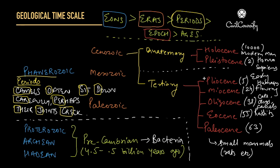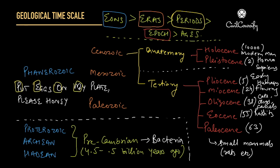For the epochs of the Tertiary and Quaternary periods, here is the third mnemonic: 'Put Eggs On My Plate, Please Honey.' Put (P) = Paleocene, Eggs (E) = Eocene, On (O) = Oligocene, My (M) = Miocene, Plate = Pliocene, Please = Pleistocene, Honey (HO) = Holocene. This way you can remember all the epochs of the Cenozoic era — imagine someone asking their better half to put eggs on their plate.